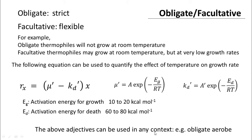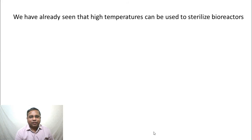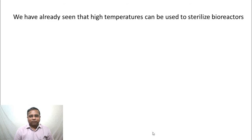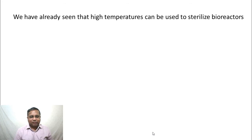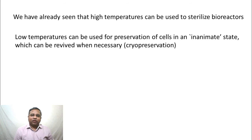We have already seen that high temperatures can be used to sterilize bioreactors, and we did quite a bit of analysis and a problem on how temperature affects cells in the context of killing them. Low temperatures can be used for preservation of cells in an inanimate state, which can be revived when necessary — a process called cryopreservation.